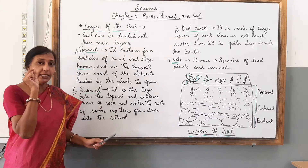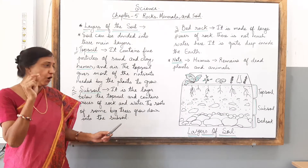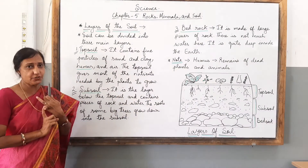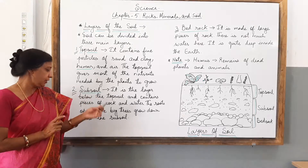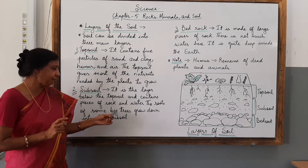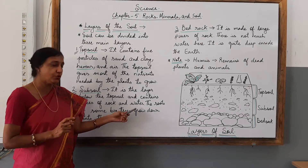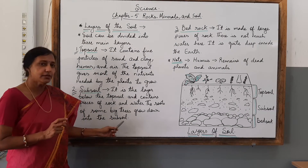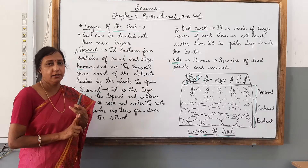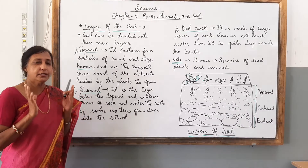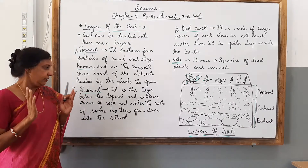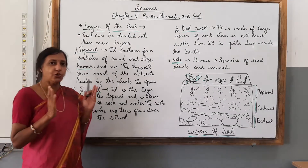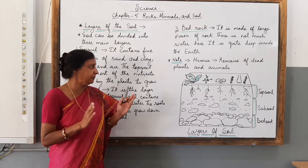So once again, subsoil is the layer below the topsoil and contains pieces of rock and water. And the roots of some big trees grow down into the subsoil, as shown here in the diagram.